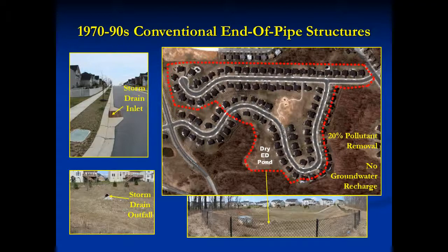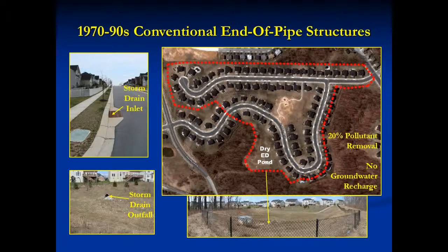Earlier I mentioned end-of-pipe structures. The red dashed line defines the drainage area for the dry extended detention pond on the right. There are 80 homes located within the 28-acre pond drainage area, and the pond is the only stormwater facility serving this area. The runoff enters inlets like the one you see on the left, then discharges into the pond at the outfall. Unfortunately, extended detention provides very ineffective pollutant removal and poor aquatic resource protection. The large drainage area also increases the likelihood that this practice will eventually fail.